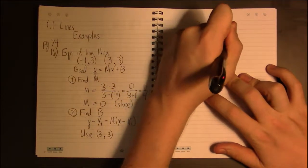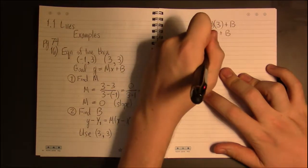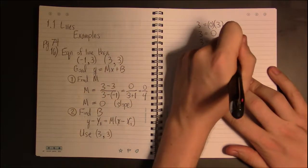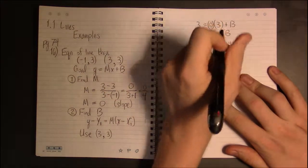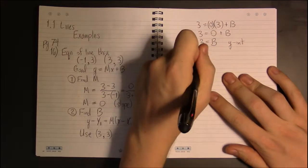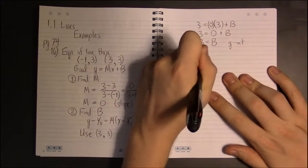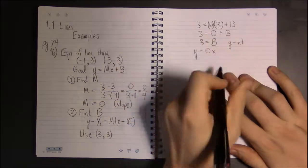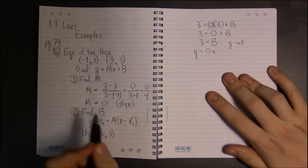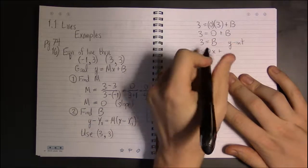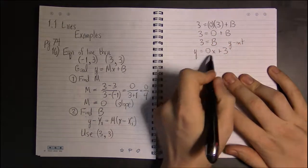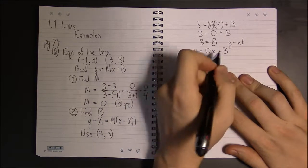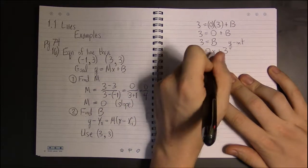and our goal in this part of the problem is to find the value of B. Well, 0 times 3 is 0, so B is 3. This is our y-intercept. So our line is Y equals